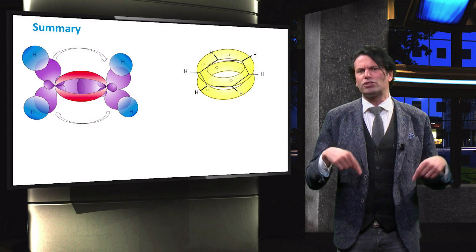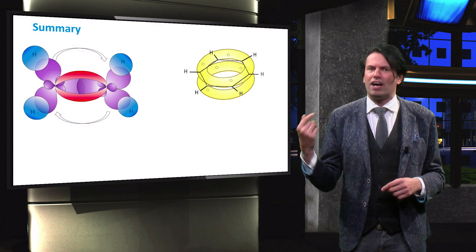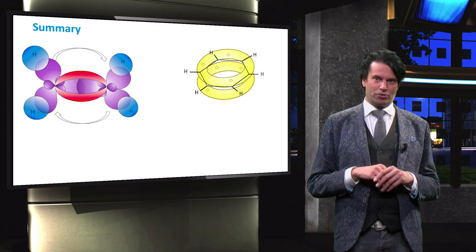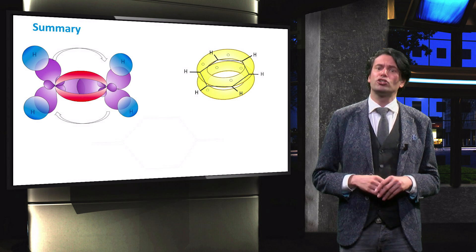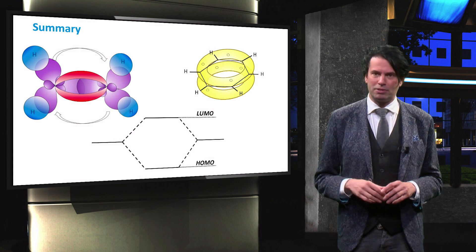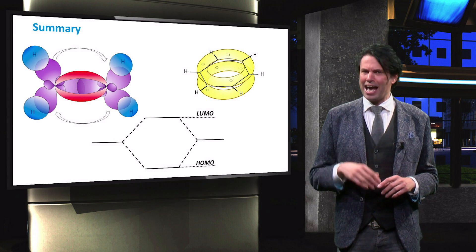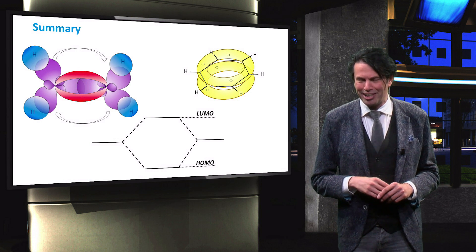This in turn gives rise to energy states equivalent to the valence and conduction band in inorganic semiconductor materials. This helps us to define the bandgap in these materials. In the next video we will look at an organic heterojunction solar cell.